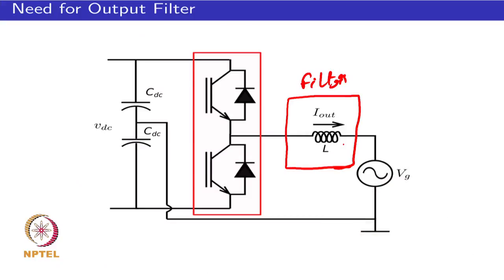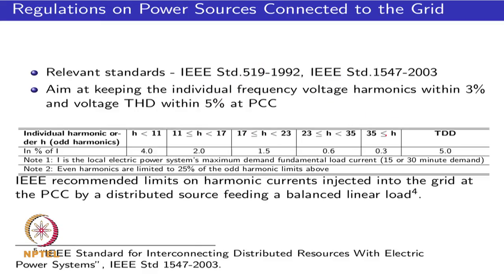The question of why a filter is needed arises because the grid supplies a sinusoidal voltage while the power converter produces pulsed output waveforms. Without a filter, directly connecting the converter would produce large current spikes bearing no resemblance to a sinusoid, making the inverter non-functional. A filter is therefore essential, and its required level of attenuation is determined by the relevant regulations on connecting distributed generation (DG) to the grid.